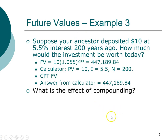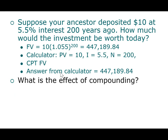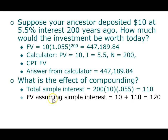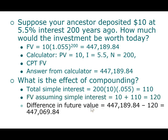Let's also compute compound interest to see the effect of compounding. Using simple interest at 5.5% on ten dollars for 200 years: total simple interest = $110, so the accumulated total would be $120. With compound interest, however, the ending balance was $447,189.84. The difference between the compound interest ending value and the simple interest ending value is the effect of compounding — and in this case it's significant because we invested for 200 years.